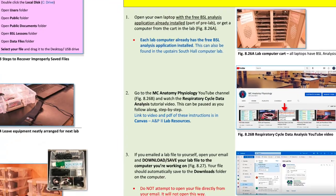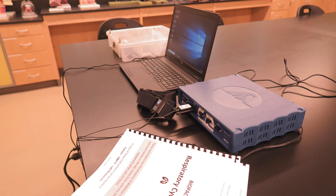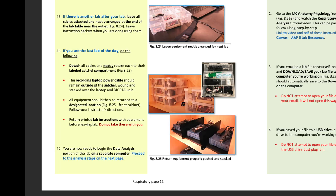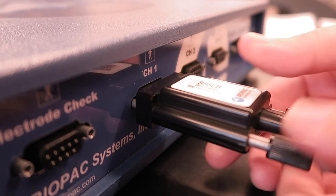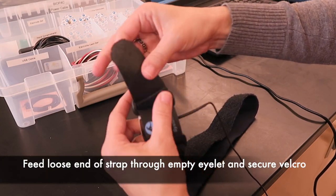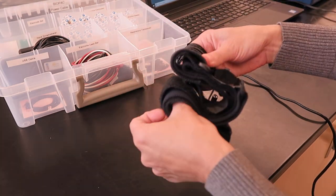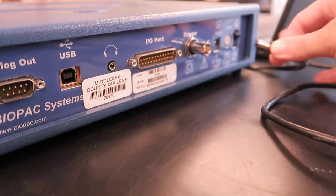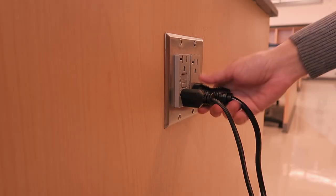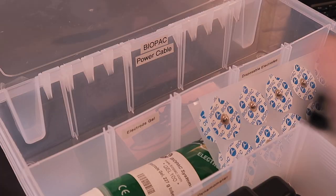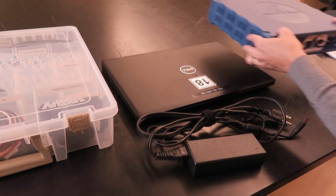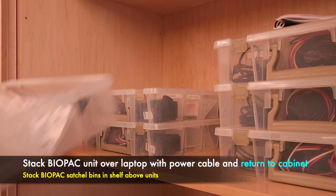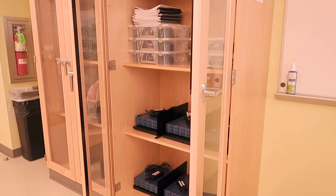Before proceeding to data analysis, if there is another lab occurring after yours, please leave all equipment attached and neatly arranged at the end of the lab table for the next group. If your class is the last to conduct the respiratory cycle lab for the day, follow the cleanup procedures listed in the lab instructions. This entails shutting down the MP36 unit and laptop, loosening the side screws and unplugging the respiratory transducer, refeeding the open end of the transducer strap through the empty eyelet, securing the velcro end, and folding the strap neatly along with the cable wire before placing it in its labeled compartment. Unplug all remaining cables and carefully wind and return them to their labeled compartments in the Biopac satchel. Return the Biopac laptop, power cable, MP36 unit, and satchel to the cabinet in the front of the room, and return the respiratory cycle lab procedures manuals before leaving.